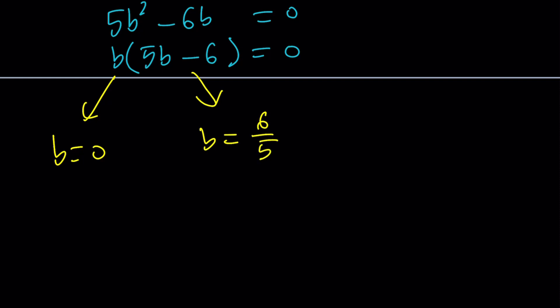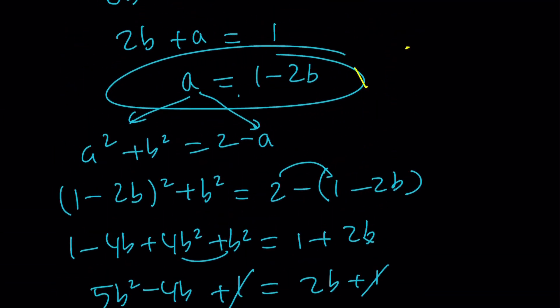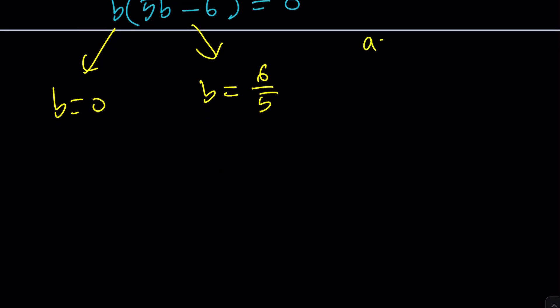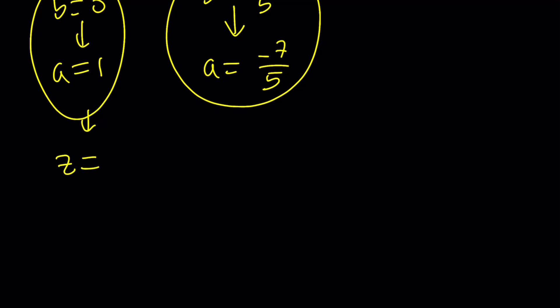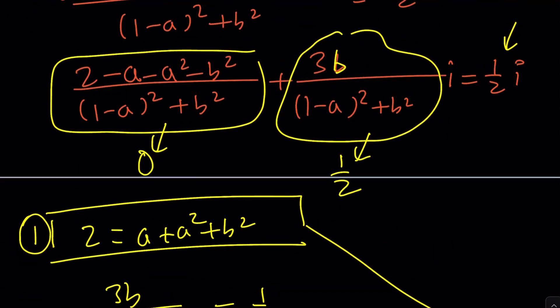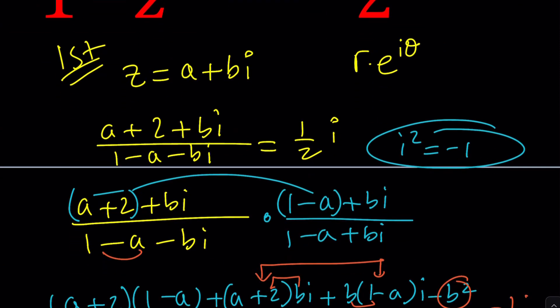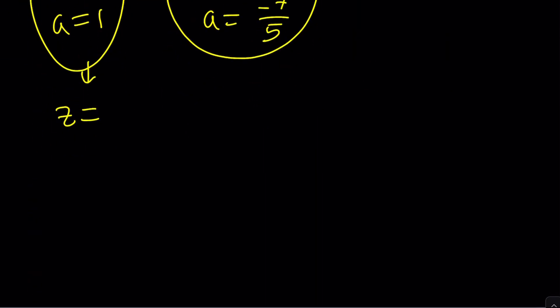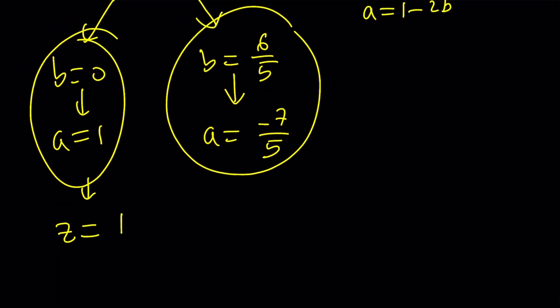So when you plug these in, you're going to find A values. And remember, we have a formula. A is equal to 1 minus 2B. And now if B is 0, then A is going to be 1. And if B is equal to 6 over 5, double that, 12 over 5, subtract from 1, 5 over 5, that's going to give you negative 7 over 5. So we got these ordered pairs, and this basically means that Z equals A plus BI. That was our initial assumption. We wrote Z in standard form. So Z can be written as A plus BI. That's the name of the channel as well. So from here, we get Z equals 1, because B is 0, no imaginary part. And from here, we get Z equals negative 7 over 5 plus 6 over 5 I.